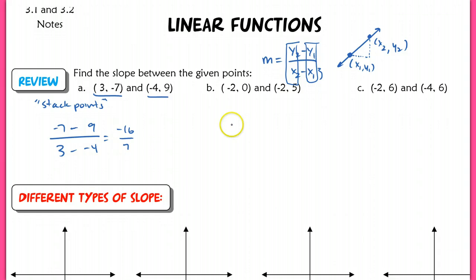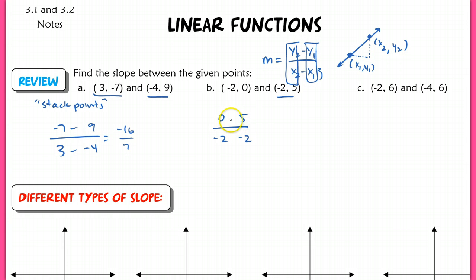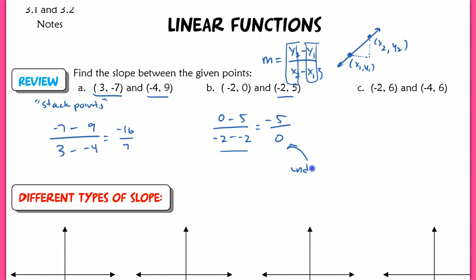In example B, I want to show you something that happens when you stack your points. Pick the first point, put 0 on top and negative 2 underneath, then the second point with 5 on top and negative 2 underneath, and subtract. In the numerator I get negative 5, but in the denominator I get 0. When you have 0 in the denominator, you can't divide by 0 — this is undefined. If you put it in your calculator, it'll give you an error message.